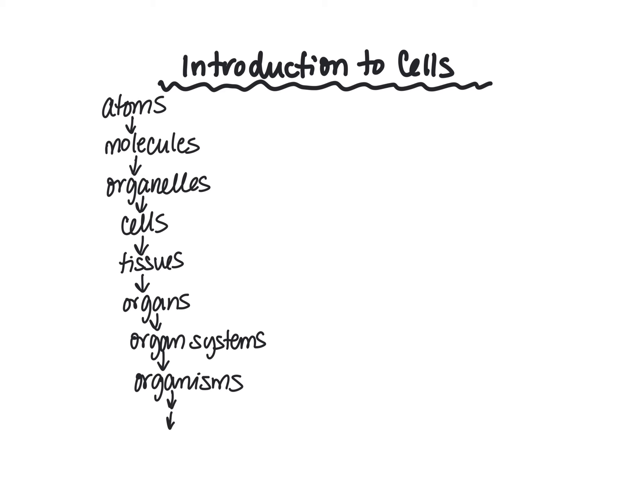We also talked about populations, communities, ecosystems, and the biosphere, but we're just going to stop and focus on these levels here. First let's take a closer look at the definition of tissues and organs, and then we're going to work backwards and talk more about cells and organelles.